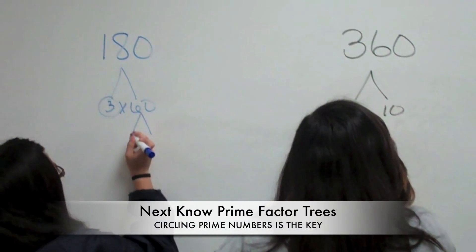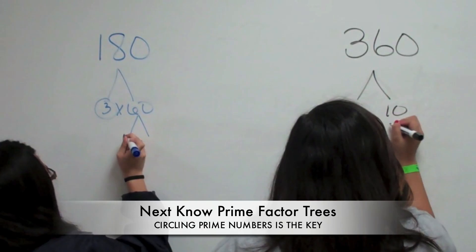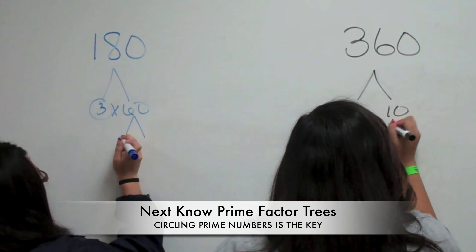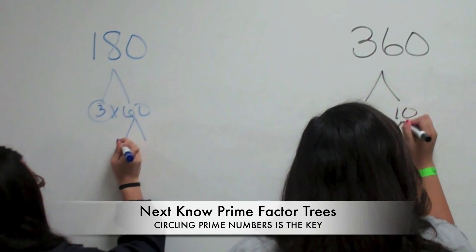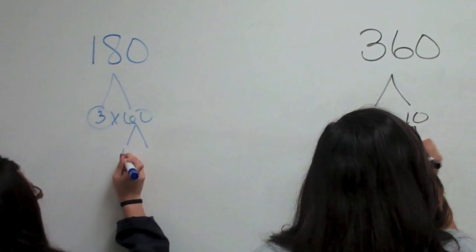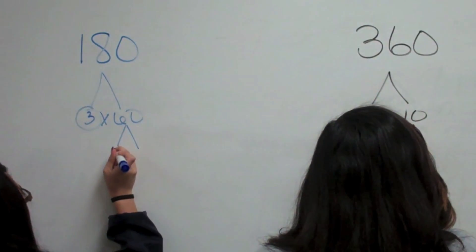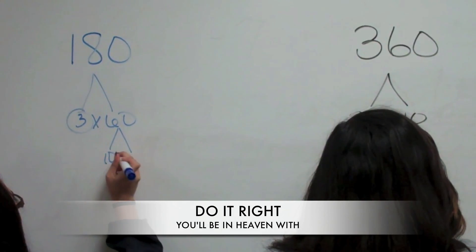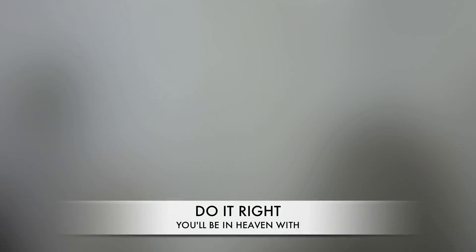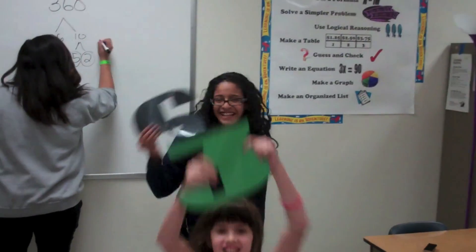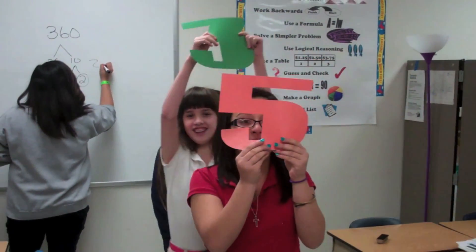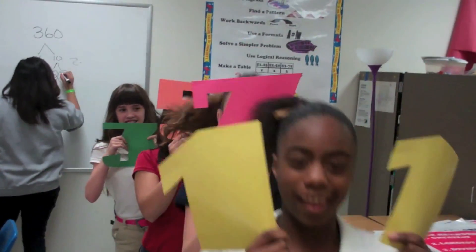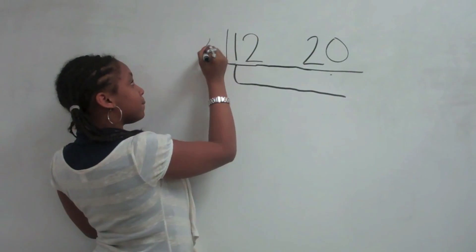Next, the prime factor tree! Circling primes as you go is the key! Do it right, you'll be in heaven with 2, 3, 5, 7, 11!